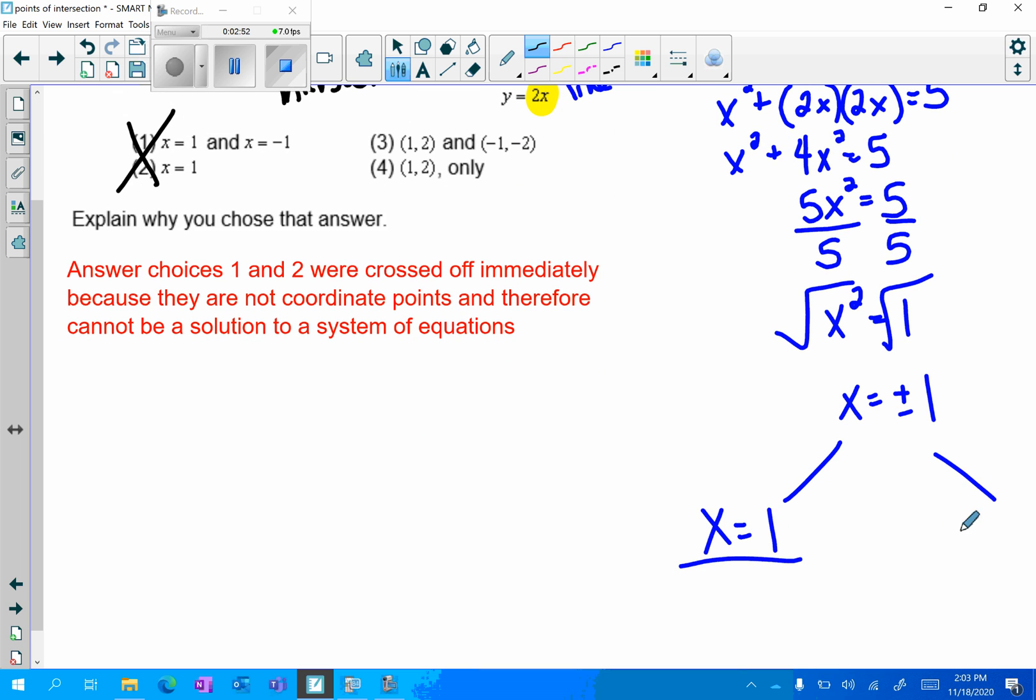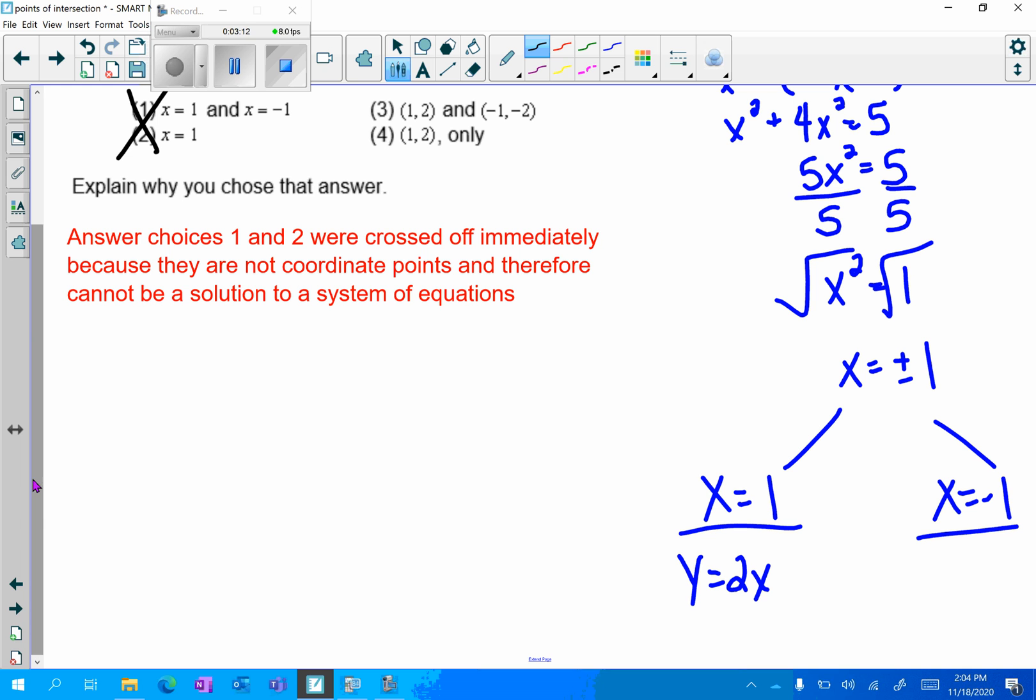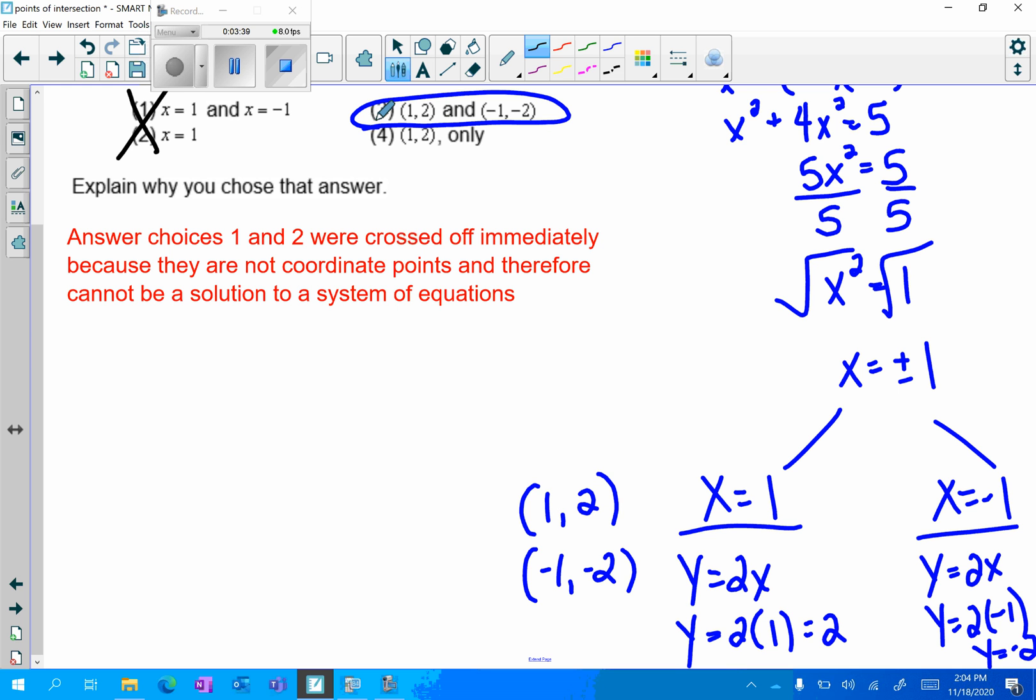I have x equals 1 as an answer and x equals negative 1 as an answer. But remember we're finding a point of intersection so that means I have to have an x and a y. So I have to plug back in, substitute, and get my y value. y equals 2x, so y equals 2 times 1 which is 2, so this is the point (1, 2). Do the same thing over here with my second point: y equals 2 times negative 1, so negative 2. So my second point is (-1, -2), which means my answer should be choice 3.